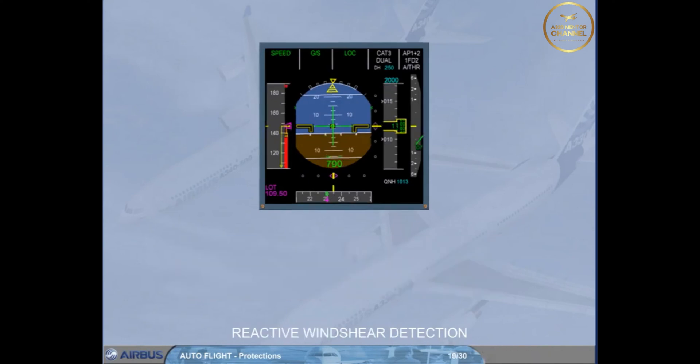If the aircraft encounters wind shear conditions, detected by the FE part, a red wind shear message is triggered on both PFDs, associated with an oral "wind shear, wind shear, wind shear" warning.